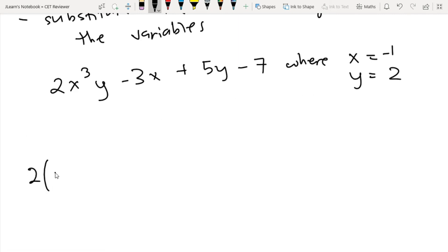So 2 times x is -1, so negative 1 cubed. Take note that the negative is also cubed. Y is 2, minus 3 times x is -1 again, plus 5 times y is 2, minus 7. Now we evaluate this: 2 times -1 cubed times 2 is -4, -3 times -1 is positive 3.